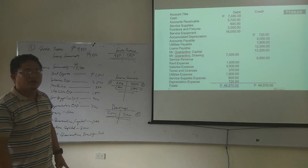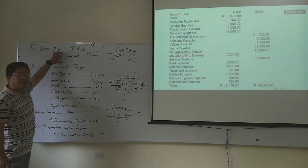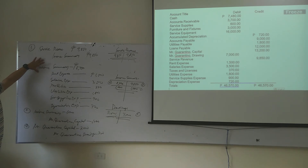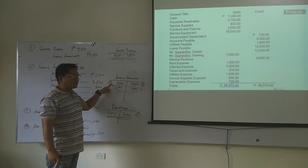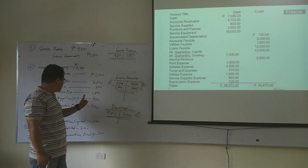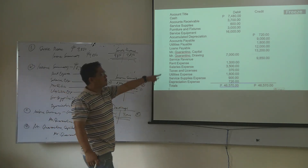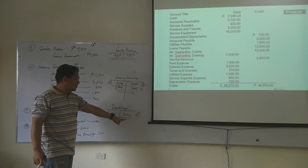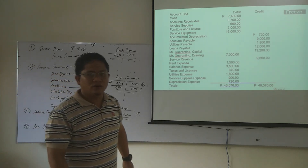So that's how we do closing entries. Step one: close revenue accounts to income summary. Step two: close expenses — normal balance debit, so credit to income summary. Step three: close income summary account — the remaining balance from steps one and two is closed to the capital account. Step four: close drawing account to capital account — drawing account is debit, so to close you credit it; debit capital, credit drawing.